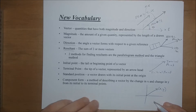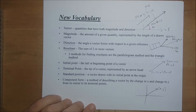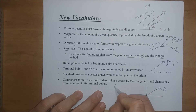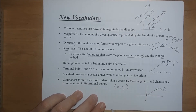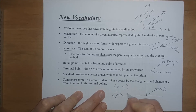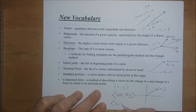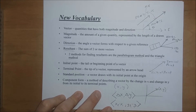We also have component form, which is a way to describe a vector uniquely. We write coordinates like x comma y, but component form uses square brackets: [Δx, Δy]. For those unfamiliar, delta x and delta y are x₂ minus x₁ and y₂ minus y₁, looking at the coordinates of the initial point and the terminal point.